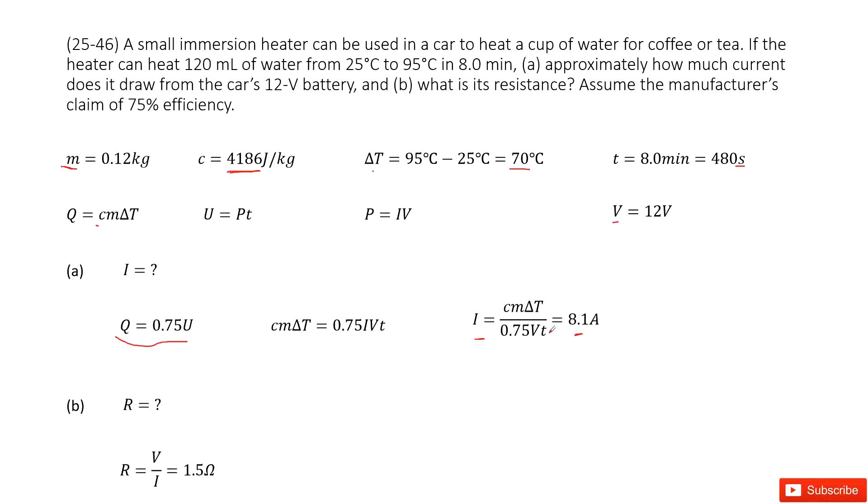The second question asks you what is its resistance. You can see in this case the heater's voltage is given, current is found. So we can find the resistance in Ohm's law as the voltage divided by current. So it is 1.5 Ohms. Thank you.